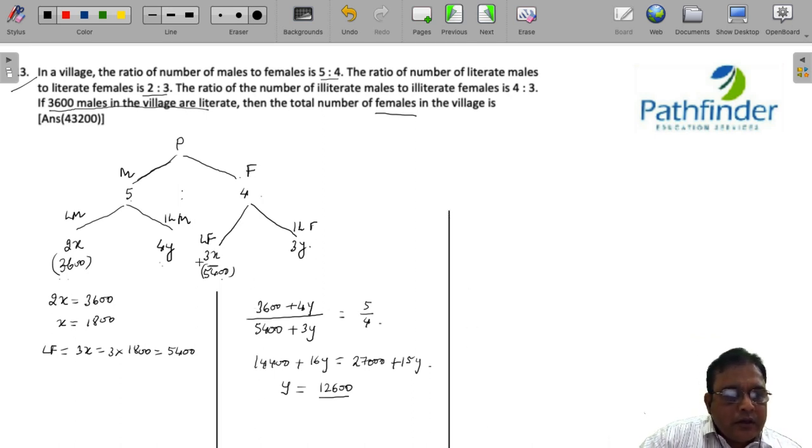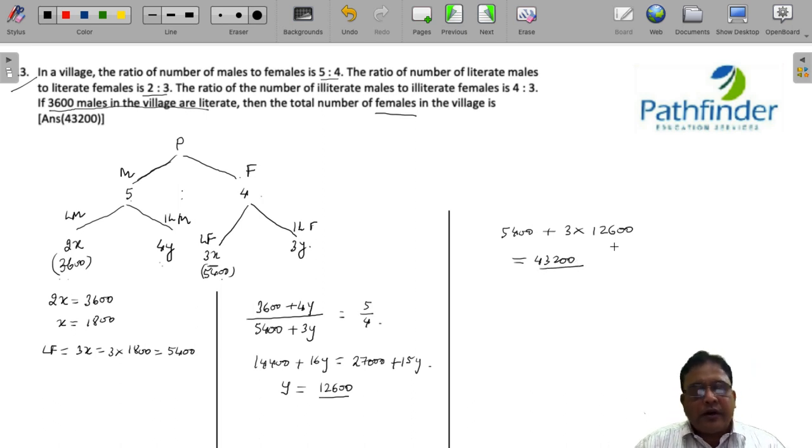What is the total number of females? 3x plus 3y. 3x is nothing but 5400 plus 3y is 3 into 12600. If you simplify this, you should get 43200 as your answer.